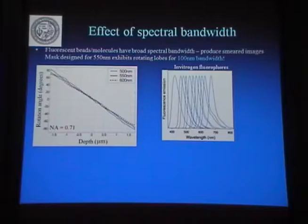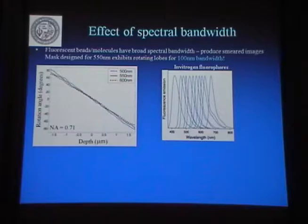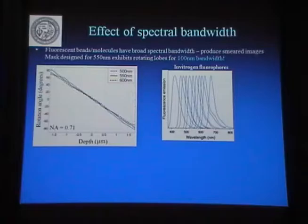What is the effect of the bandwidth? If you are working with fluorescence, these fluorophores have some bandwidth — they are not a laser. We want to know: if the bandwidth is about 100 nanometers, what happens when we change the wavelength for the double helix? Well, you still get rotation, similar rotation, for about 100 nanometers. So bandwidth is okay — it still works if you have a slight variation in wavelength.